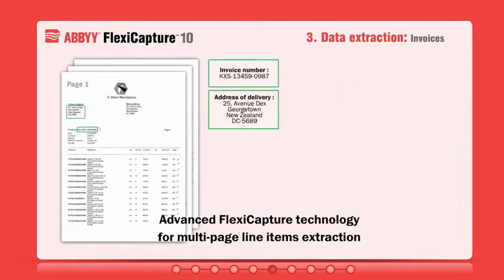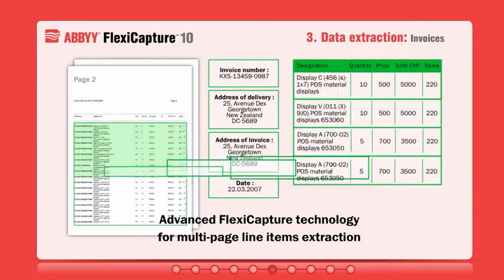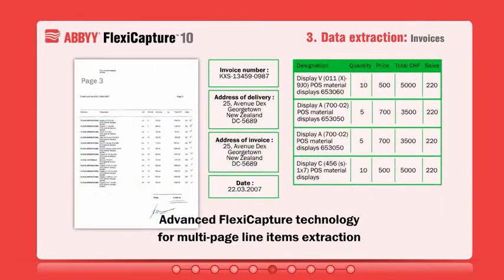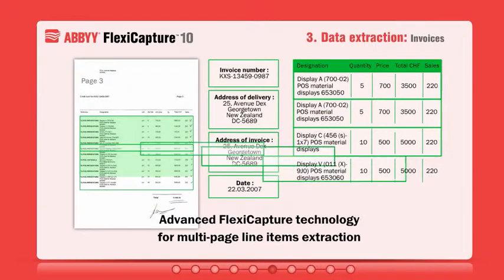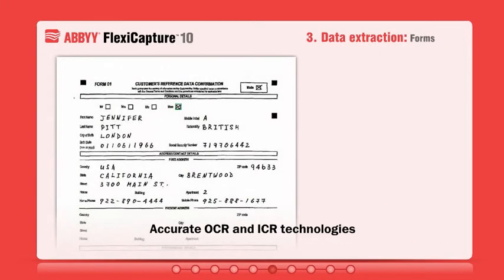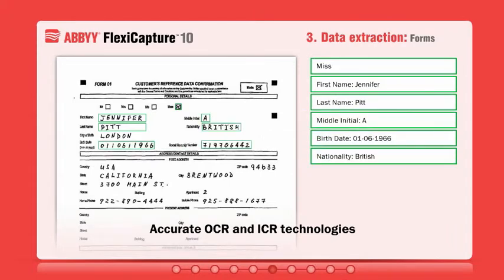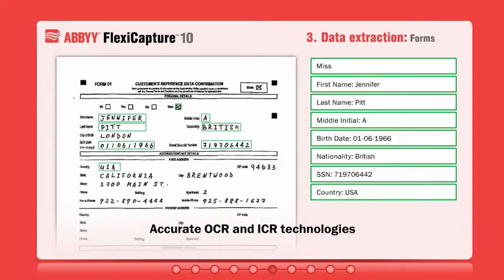FlexiCapture is able to extract data from any kind of document, including those with complex structures like invoices and multi-page documents. ABI's award-winning optical character recognition and intelligent character recognition technologies ensure exceptional accuracy.